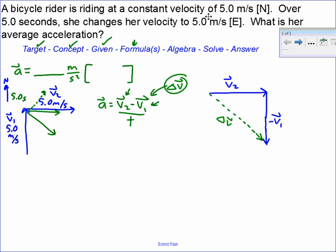Now we can just use Pythagorean theorem and tangent to figure out the magnitude and direction of that delta v. v2 is 5, v1 is 5, so we're going to go 5 squared plus 5 squared. That comes out to 50, and that's delta v squared. So delta v is 7.07 and so on.